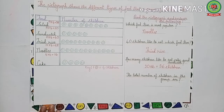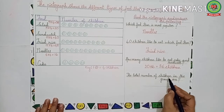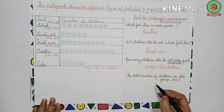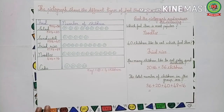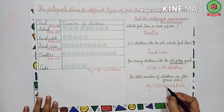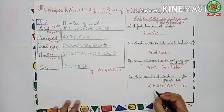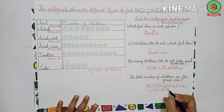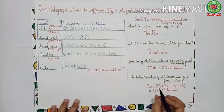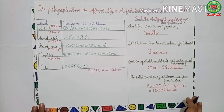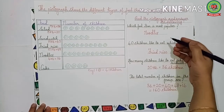The next question is: what is the total number of children in the group? We have to add all the numbers: 36 plus 20 plus 40 plus 48 plus 16. We get the answer as 160 children. You can do the addition at the side, adding two to three numbers at a time. In this way we have to read a pictograph and answer questions.